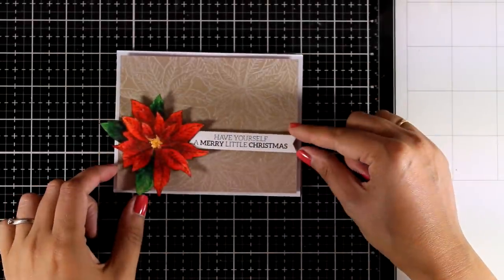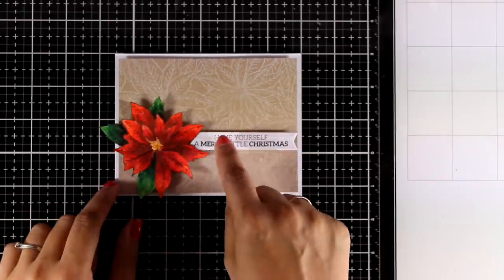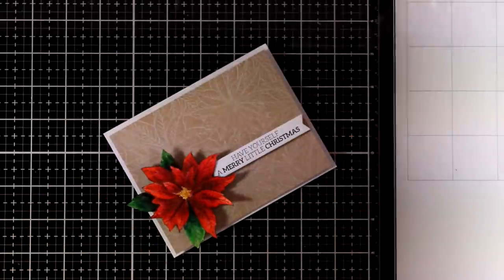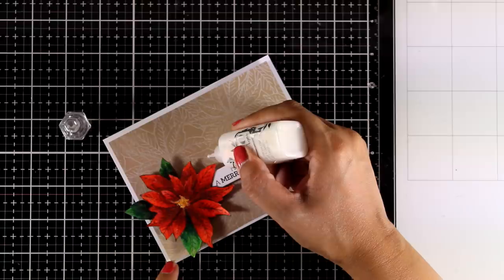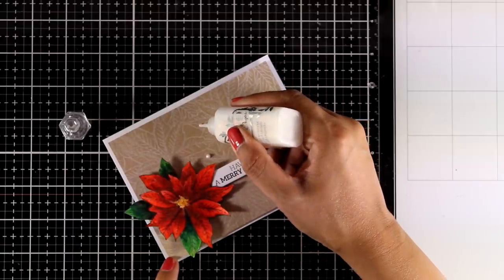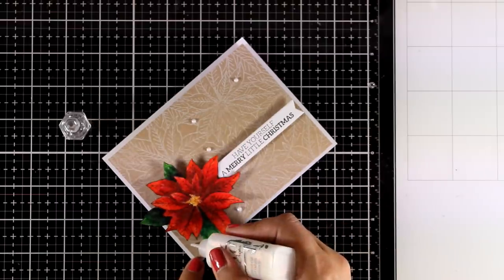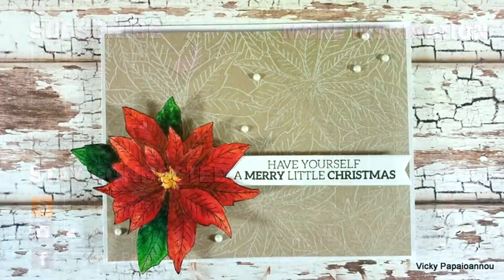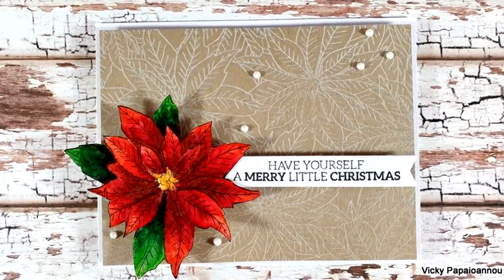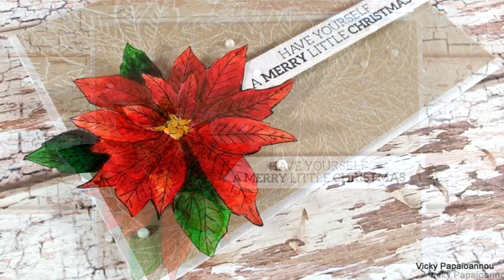And since I love dimension I do have foam squares at the back of the poinsettia as well as at the back of the sentiment. And I'm going to finish it all with a few Nuvo drops. And notice that my focal point matches perfectly the design of my background.